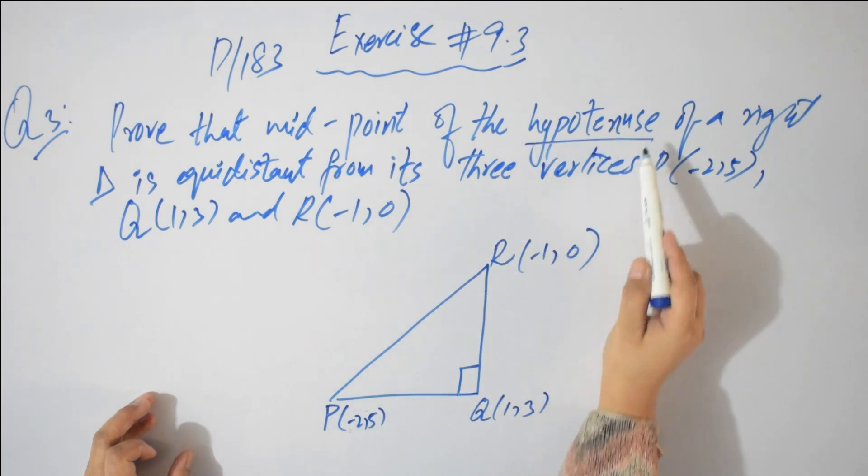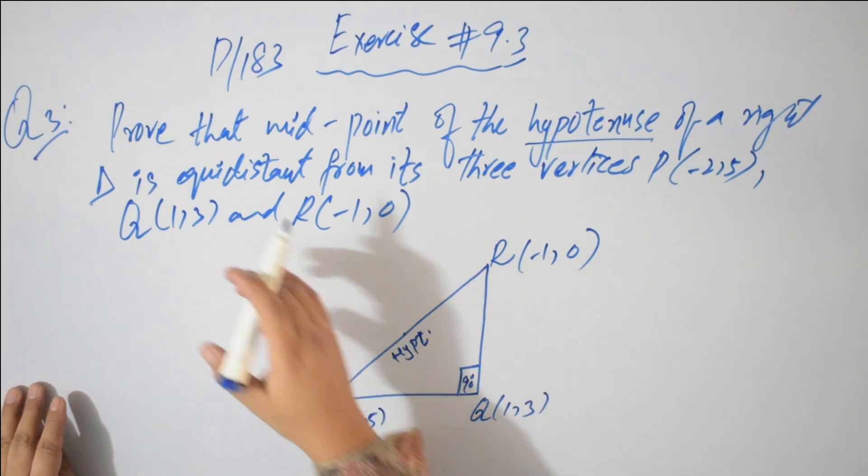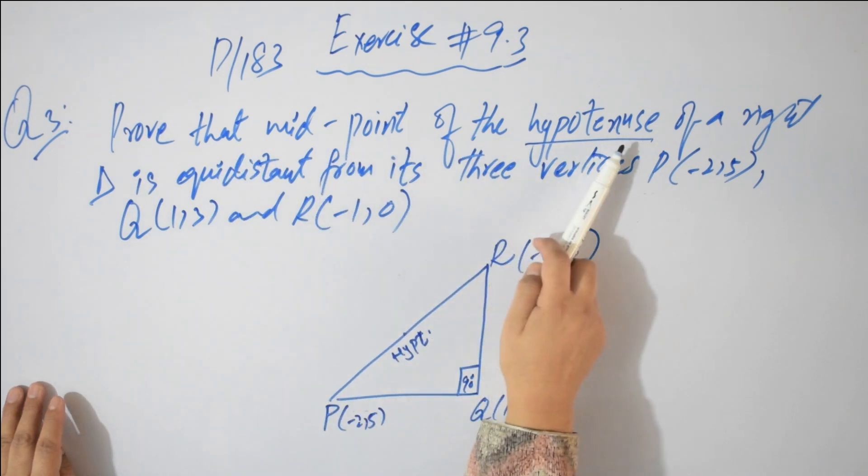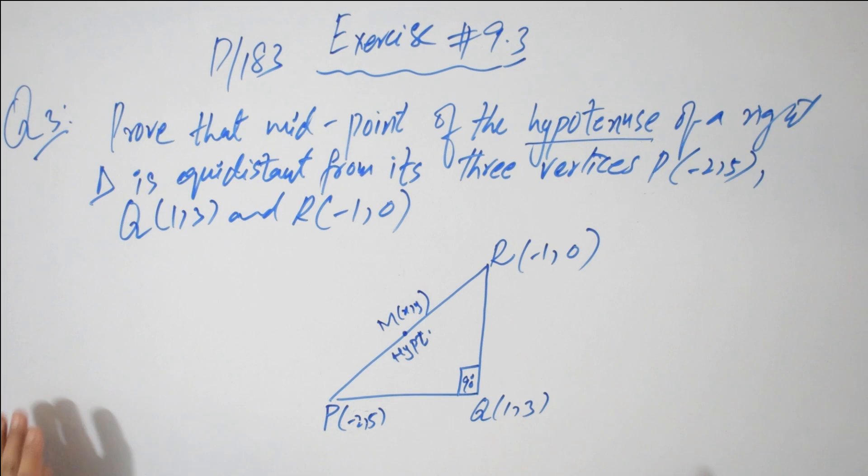Now, here you have seen the word hypotenuse. First, you have to decide which side is your hypotenuse. The side which is opposite to 90 degrees, this side is your hypotenuse. Right triangle and the vertices, everything is now clear.